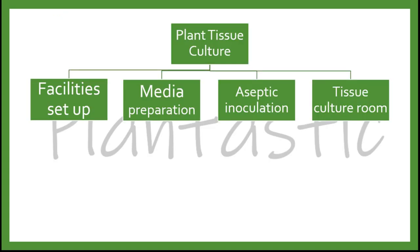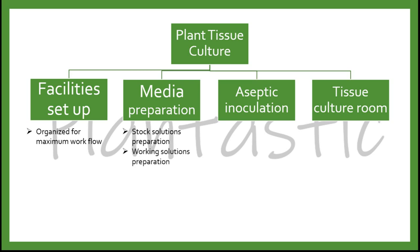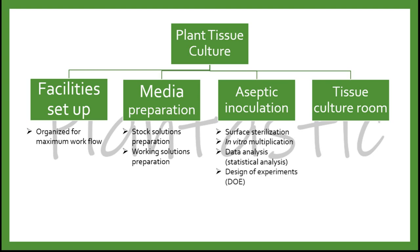In order to start up a tissue culture, first we need facility setup, followed by media preparation, aseptic inoculation, and incubation of the cultures in a digital culture room. Facility setup has to be planned to organize and maximize the workflow. For media preparation, we need to prepare stock and working solution. For aseptic inoculation, surface sterilization will be carried out, as well as in vitro multiplication. Don't forget to take data for statistical analysis to study which treatment gives you the best response. You may also plan your experiment with Design of Experiments, known as DOE. For the digital culture room, besides the aircon, the lighting system is important, and you have to check for contamination constantly, also for acclimatization purposes.